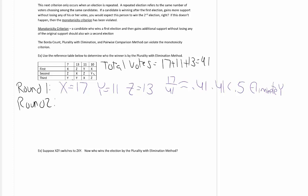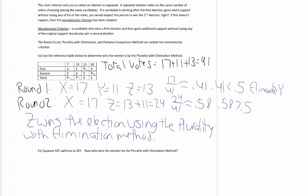Now the only candidates we have left are X and Z. X is still 7 plus 10, that's 17. Z, on the other hand, has the 13 plus the 11, which is 24. 24 divided by 41, that's approximately 0.58. 0.58 is greater than 0.5, so candidate Z does have a majority of first place votes. Z wins the election using the plurality with elimination method.